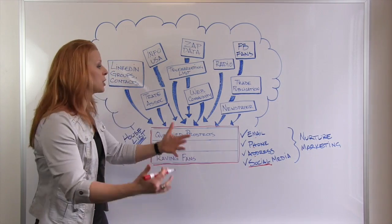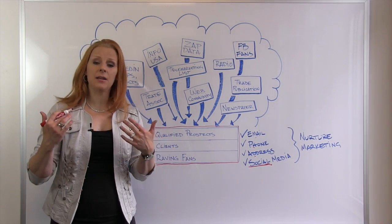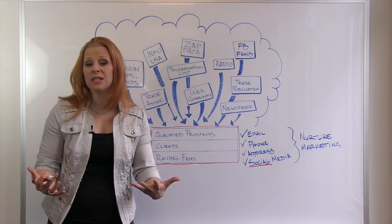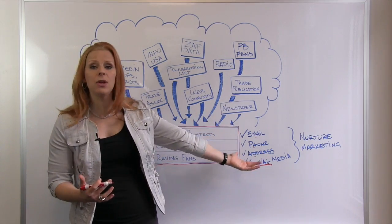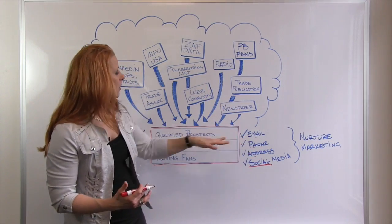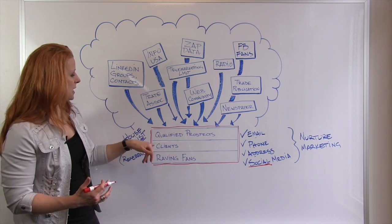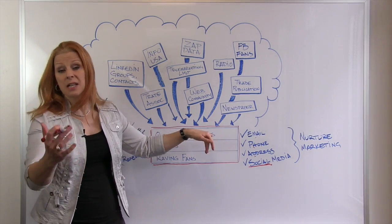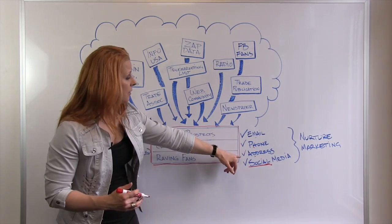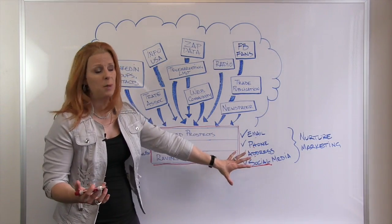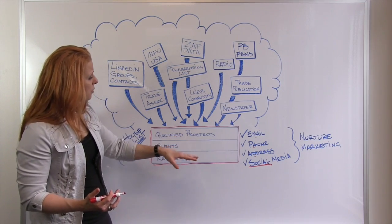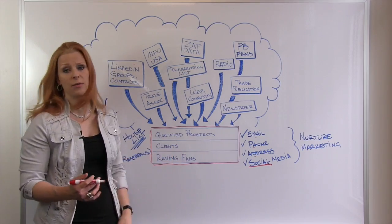You've got to get permission marketing. You've got to attract people and provide them content, information, or value in some way where they want to give you their email address and hear from you on a consistent basis. Some of your qualified prospects will fall into that category; some may have opted out of your list, so you'll have to rely on phone, mailing, or social media to reach those people. But you should definitely have the email, phone, and social media of your clients and raving fans.